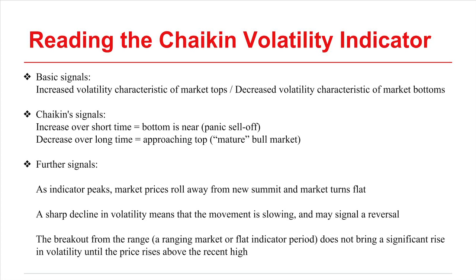Conversely, decreased volatility is typical of market bottoms, with little activity where sell-offs are winding down. Chaikin identifies two further signals for using the indicator to make predictions.